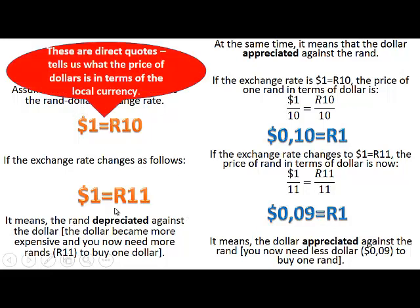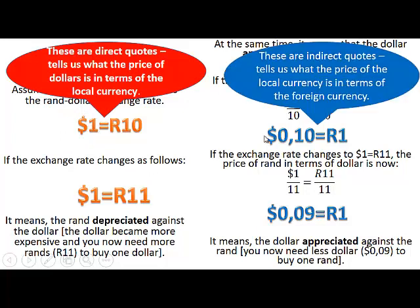So these are direct quotes — they tell us what the price of dollars is in terms of the local currency, so what $1 will cost you to purchase. These are indirect quotes — they tell us what 1 rand of the local currency will cost in terms of the foreign currency. So: direct quote, indirect quote.